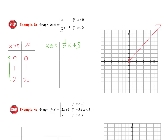For the next table with x less than or equal to 0: include 0 — that's a closed circle — and choose negative 1 and negative 2. When x is 0, we get 3. When x is negative 1, we get 2.5. When x is negative 2, we get 2. We plot (0, 3) with a closed circle, (negative 1, 2.5), and (negative 2, 2), following along in that direction.